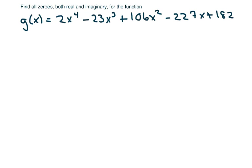Hi everyone, we're continuing polynomials. In this problem we're going to find all the zeros, both real and imaginary, for this function. I went ahead and put this one in the calculator and I saw right away that one of the zeros is 2, because it crosses the x-axis there. I'm going to use synthetic division to help me find the other zeros.